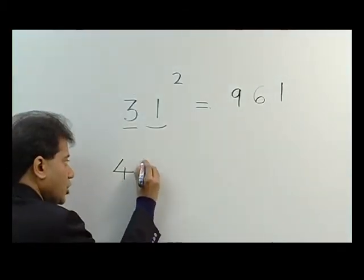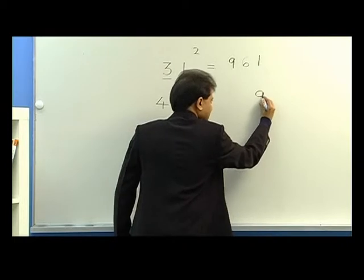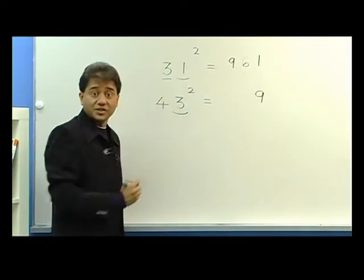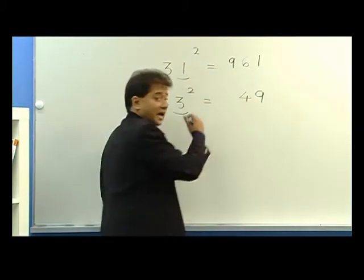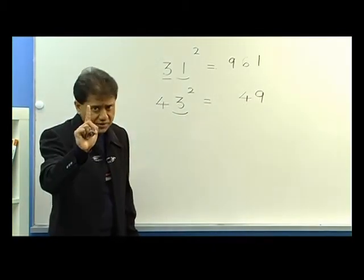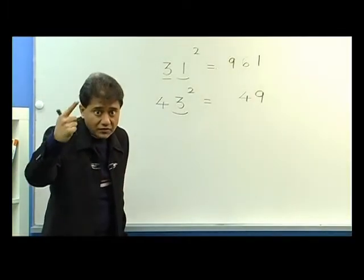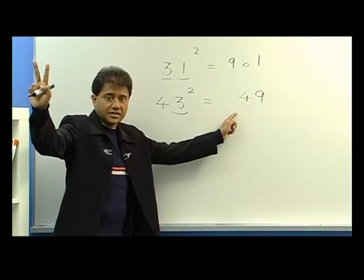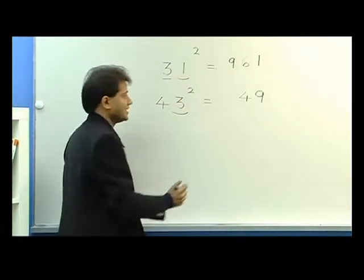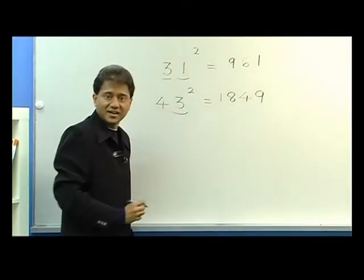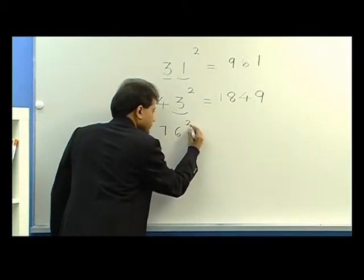Let me take another example: 43 squared. 3 squared is 9. 4 times 3 is 12, and double of 12 is 24 — I write 4 and the remainder is 2. Now 4 squared is 16, plus the remainder 2 is 18. So the answer is 1849.